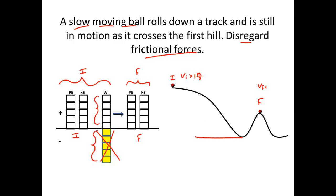Scientists typically express potential energy as PE equals mgh — mass times gravity times the height of an object. Usually the height is the distance between the lowest point and the highest point in the system. So initially, I'm going to give this a lot of potential energy since it's at the top of a hill — about five units of potential energy, or joules. Because it's in motion, I'm also going to say we have about one unit of kinetic energy. No work has been done on the ball.